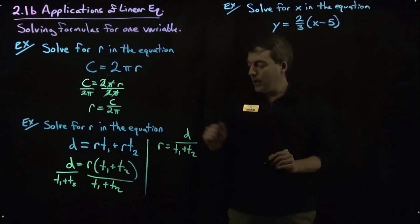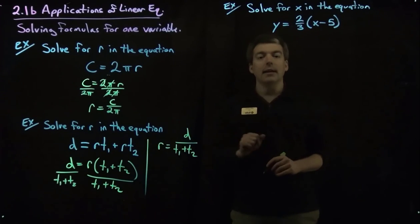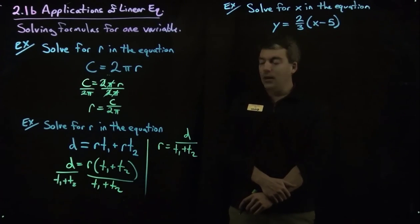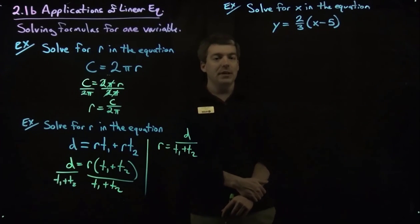And so we've solved for r. Now given a d and a t1 and t2 we could then get an r. Let's look at this last example.